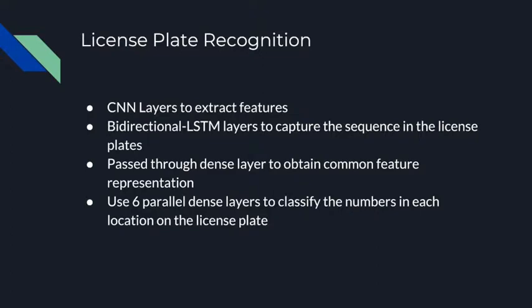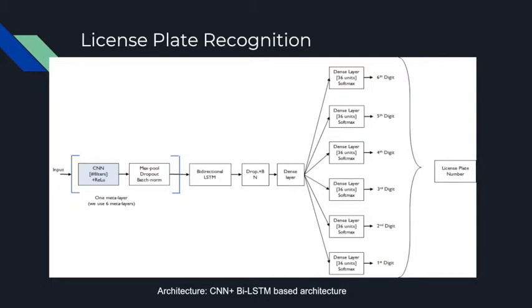For license plate recognition, we used a hybrid architecture combining CNN and bidirectional LSTM layers. CNN layers extract spatial features while bidirectional LSTM layers capture the sequence in the license plate. These features were concatenated and passed to a dense layer to obtain a common feature representation, followed by six parallel dense layers to classify the character at each position in the license plate. Since our dataset had six digits per license plate, we had six parallel dense layers in the output. Each meta-layer consists of a CNN followed by batch normalization, max pooling, and dropout — six such layers for feature extraction, followed by bidirectional LSTM, a dense layer, and the six parallel output layers.